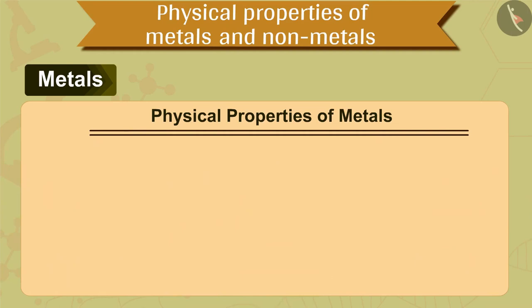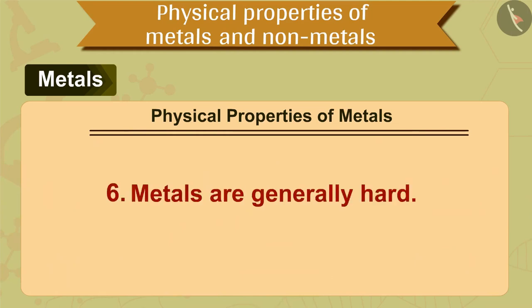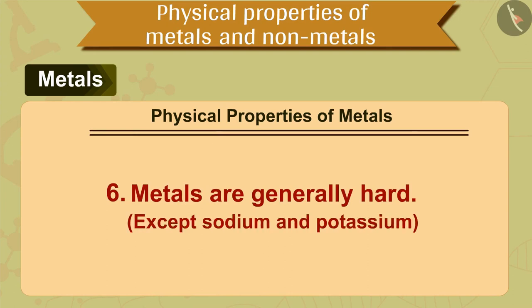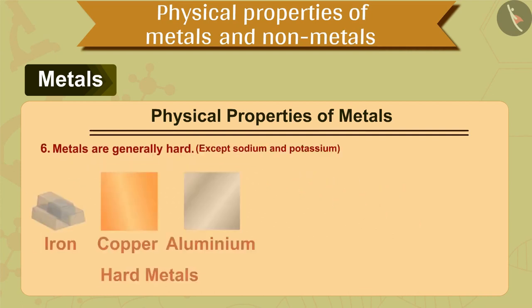The sixth property of metals is that metals are generally hard, except sodium and potassium. Most of the metals are hard but all metals are not equally hard. The hardness varies from metal to metal. Most metals like iron, copper and aluminium are very hard.